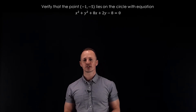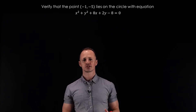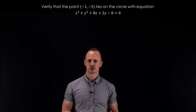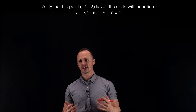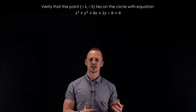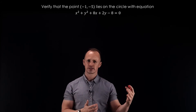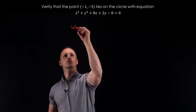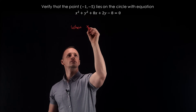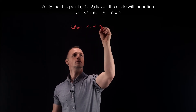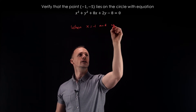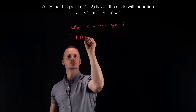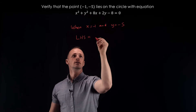In this example we're going to show that the point (-1, -5) does lie on the circle with this equation. Unlike the last example where the point didn't lie on the circle, this time we should get the left hand side and the right hand side of the equation to agree with each other. So when x equals minus one and y equals minus five, the left hand side of this equation becomes...